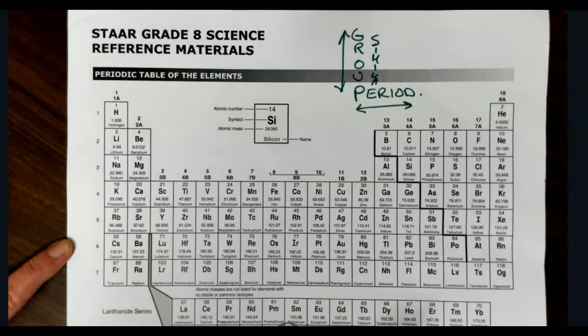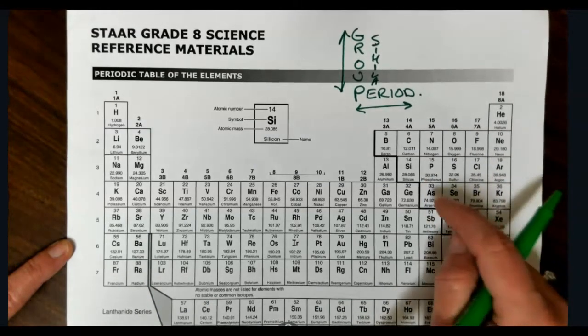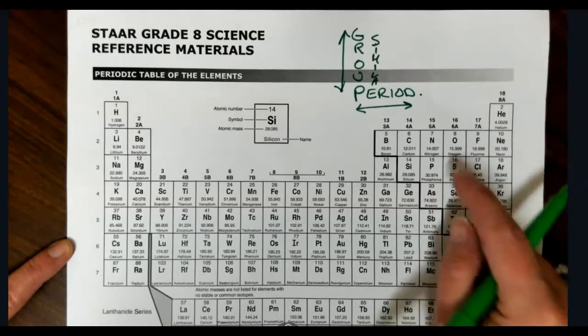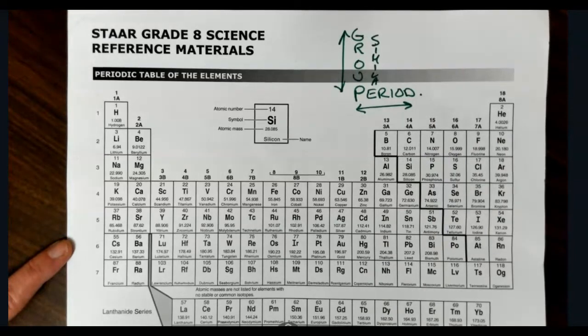So in this case, if I'm asking for phosphorus, another element that would be similar to phosphorus could be arsenic, antimony, bismuth, nitrogen. Anything in the same group is going to be similar.